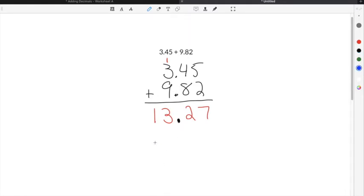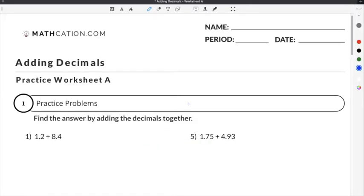This means that the answer to this adding decimals example is going to be 13.27. Let's try a couple practice problems from our adding decimals worksheet.